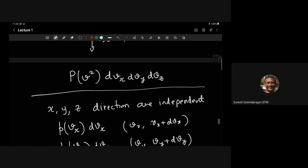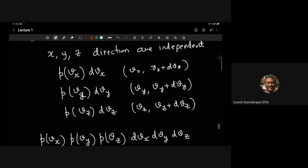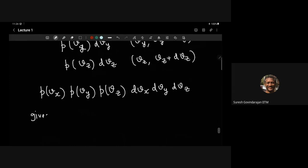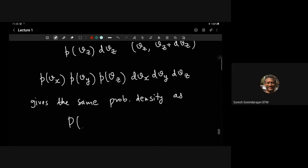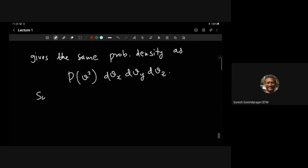These two expressions must be equal since they're answering the same question. So we need P(V²) dVx dVy dVz = p(Vx)·p(Vy)·p(Vz)·dVx dVy dVz. We need to find a pair of functions with this property.